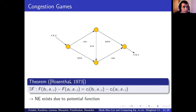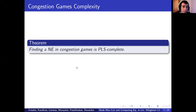One can consider the potential as the global function that each player takes turns minimizing. Because of the existence of such a potential, the existence of an equilibrium is also guaranteed. It is in fact the existence of this potential that places this problem in PLS. Moreover, not only are congestion games contained within PLS, but they are also shown to be complete for this class, meaning they are at least as hard as any other local search optimization problem.